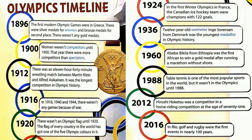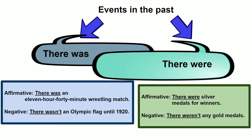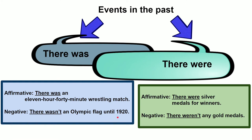Have you read the text? Can you find the use of 'there was' and 'there were' in the text? To describe events in the past, we use 'there was' or 'there were'. In the affirmative form: there was an 11-hour 40-minute wrestling match. Negative form: there wasn't an Olympic flag until 1920.